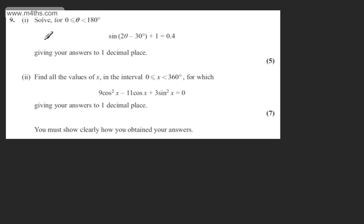This is question 9. In the first part we are asked to solve for theta between 0 and 180 degrees: sine of 2 theta minus 30 degrees plus 1 is equal to 0.4, and we are asked to give our answers to one decimal place. The question carries 5 marks.